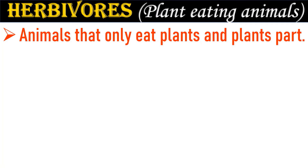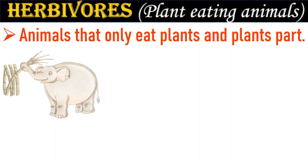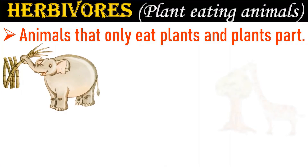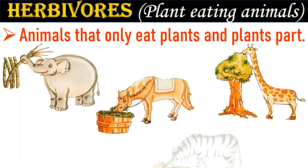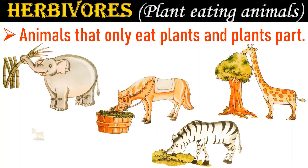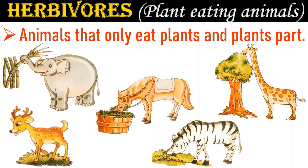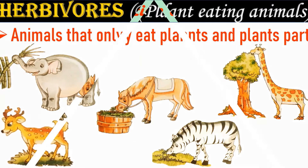First is herbivores. The animals that feed on plants and plant parts are called herbivores. Elephant, giraffe, horse, zebra and deer are some examples of herbivores.